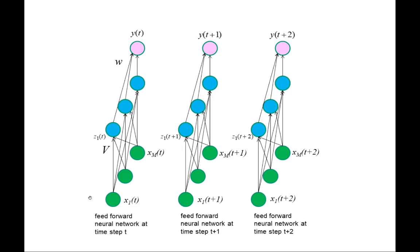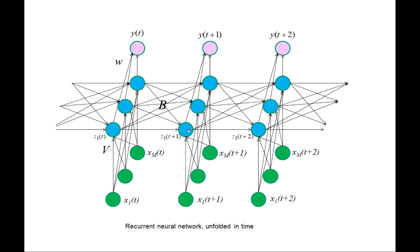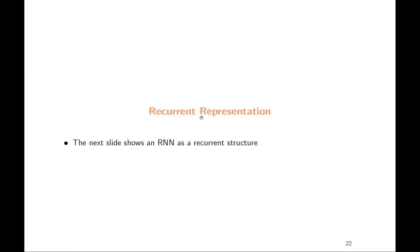Then we discussed the idea of a recurrent neural network. The easiest way to understand it is to first consider a normal neural network with inputs (green), a hidden layer (blue), and output (pink). Then you simply connect these hidden units so that each unit receives input from the inputs, but also receives inputs from the previous value of the hidden layer. Here is another connection matrix B which is also learned. This means that predictions all become dependent — the prediction at each location considers the latent representations in previous time steps, which means it also considers the previous inputs. This gives what is sometimes called a memory function.